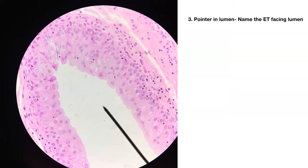Number three. Pointer in the lumen. Name the epithelial tissue facing the lumen — look real close at those apical cells. That was just a hint; you won't be getting any hints on an exam.